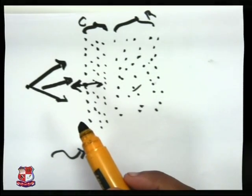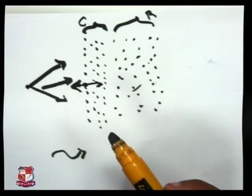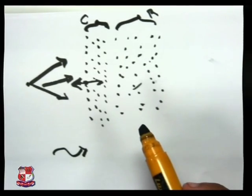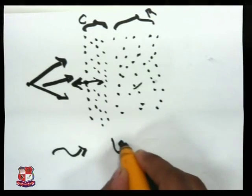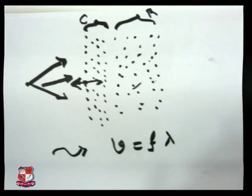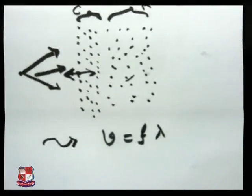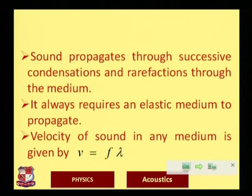Sound propagates through successive condensations and rarefactions and always requires an elastic medium to propagate. The velocity of sound in a medium is v = fλ. We can now move back to the PPT to see how sound propagates in a medium.